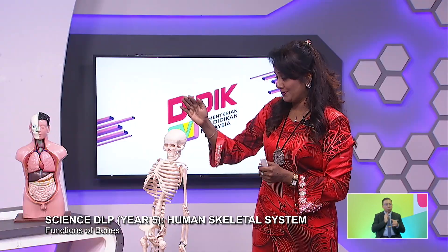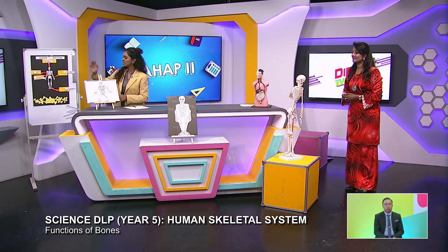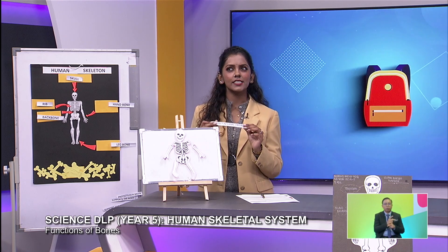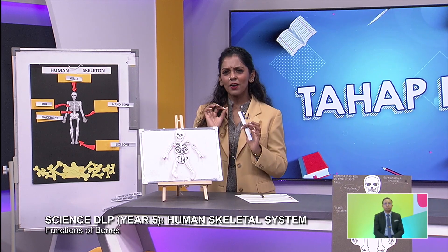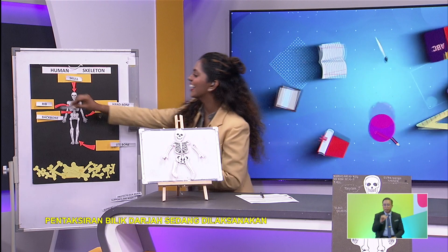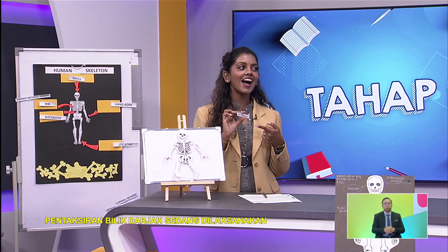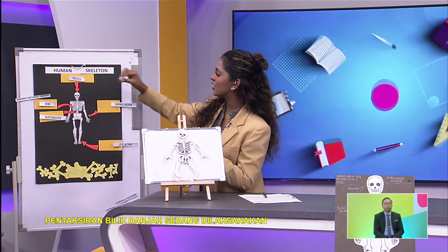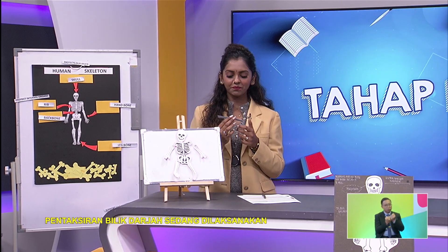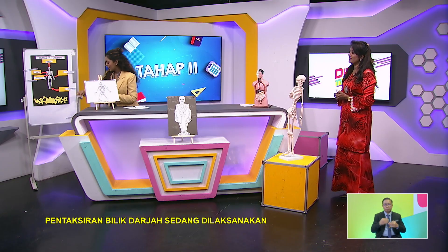Now we've done bones. Let's go to the functions. I want you to match the functions of the bones. So we have skull, rib, backbone, hand bone, and leg bone. Protect internal organs — what does that? Is it rib? Yes. Protect our brain — this is what we just learned, right? That's skull. Supports the body — is it backbone? Yes. Correct. Backbone supports the body. Two more to go.